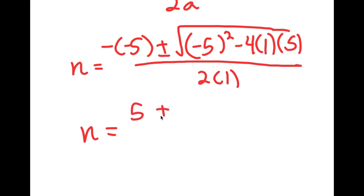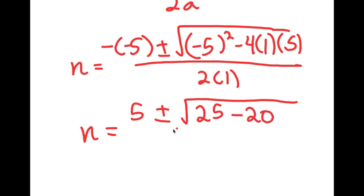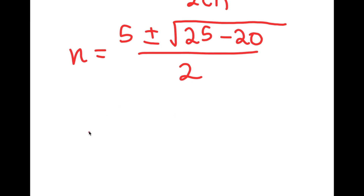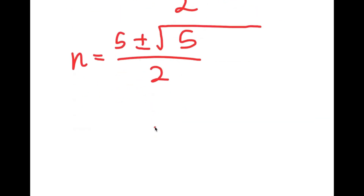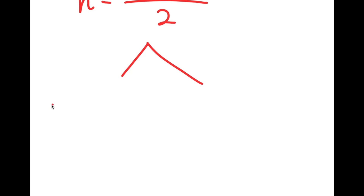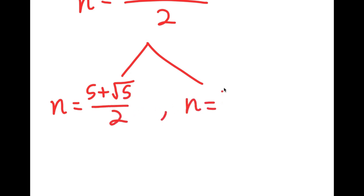This is equal to positive 5 plus or minus the square root of 25 minus 20, all over 2, which is equal to 5 plus or minus the square root of 5 over 2. This can't be simplified anymore, so n has two solutions: n₁ is equal to 5 plus the square root of 5 over 2, and n₂ is equal to 5 minus the square root of 5 over 2.